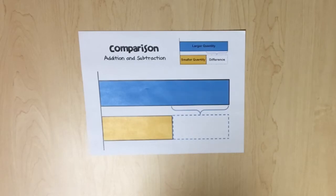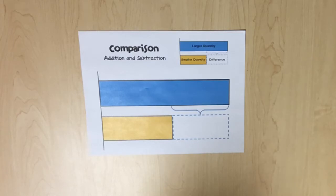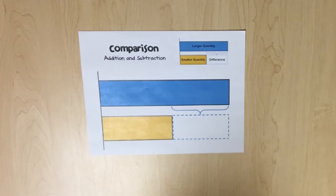Throughout the problem-solving section of the second grade addition and subtraction unit, students will apply components of the solve problem-solving process as they represent and solve problems. This will include determining what is known and unknown, identifying situation and solution equations, creating representations, and applying a strategy to determine the sum or difference and completing a solution statement.